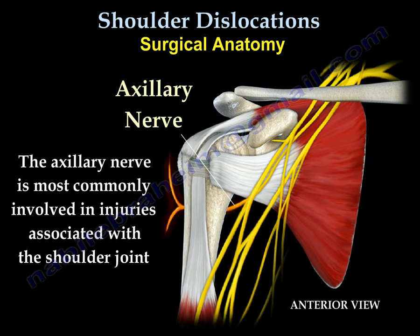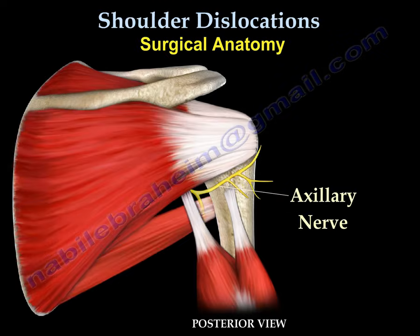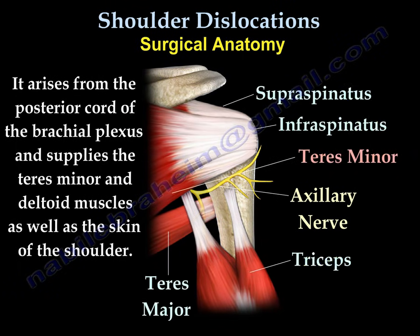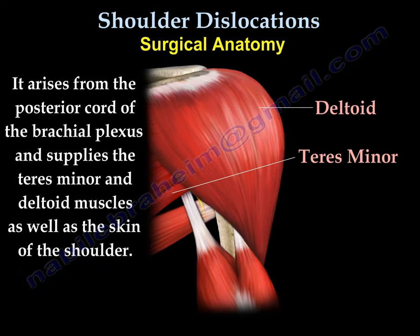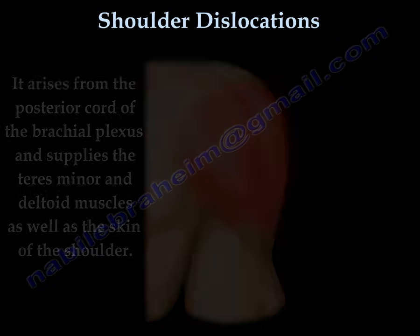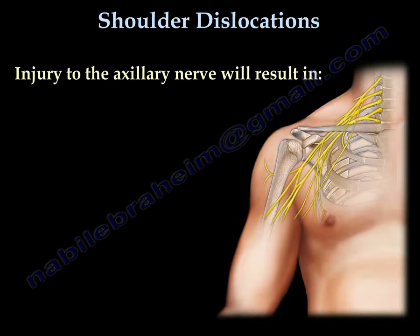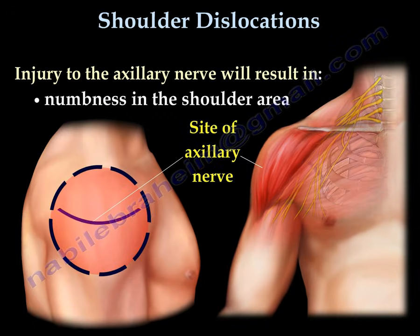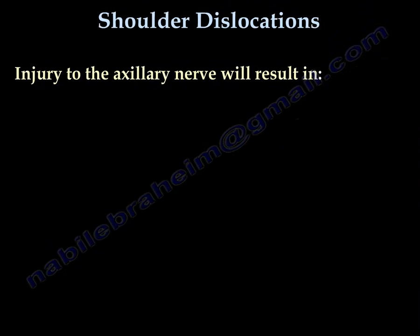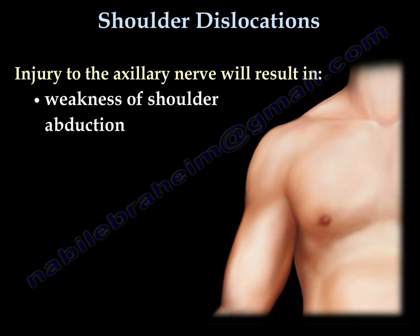The axillary nerve is the nerve that is commonly injured in shoulder dislocations. It arises from the posterior cord and supplies the teres minor and deltoid muscle, and the skin over the shoulder area. Injury of the axillary nerve will result in numbness in the shoulder area and weakness of shoulder abduction.